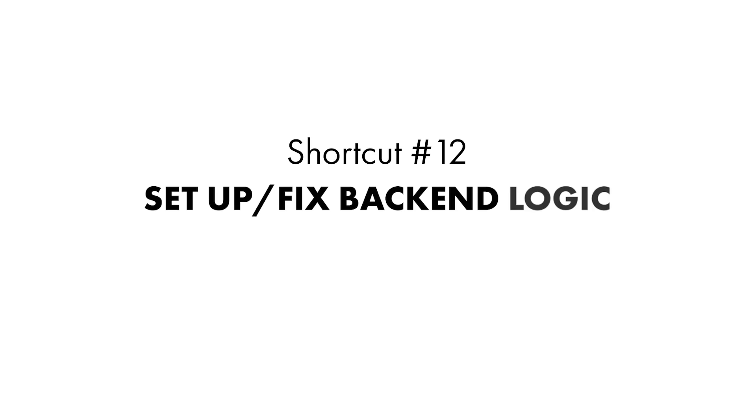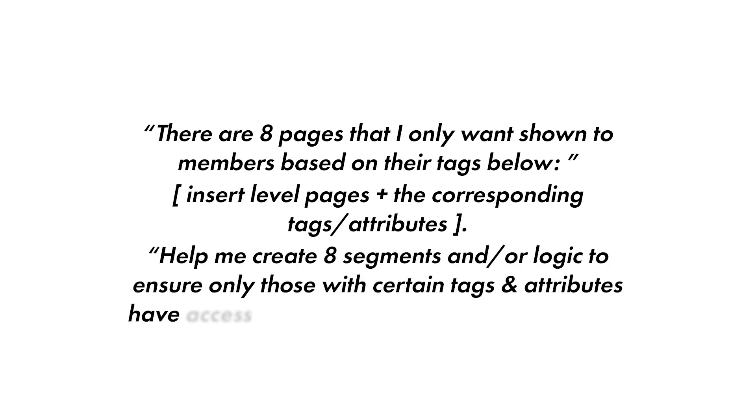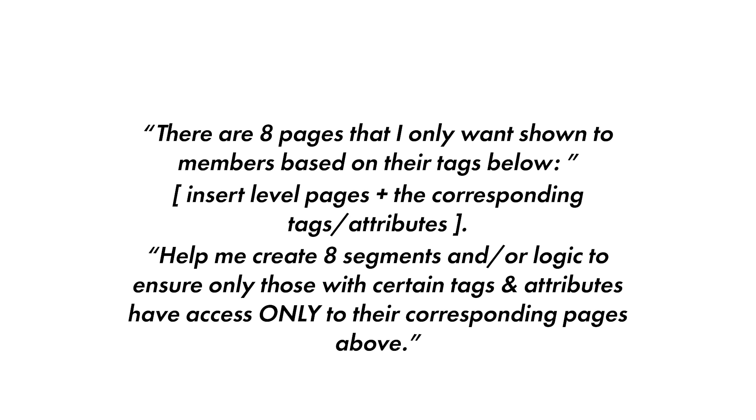Moving on to shortcut number twelve: set up or fix backend logic and automations. Setting up backend automations or fixing consumption and delivery logic in your online tools or membership platforms can feel like throwing spaghetti at a wall. We recently used this to fix logic inside one of our membership sites, which uses complex tagging and segmenting to ensure members have access to the correct level at all times. The prompt we used: 'There are eight pages that I only want shown to members based on their tags below.' We inserted the level pages and corresponding tags and attributes, then asked ChatGPT to create segments and logic to ensure only those with certain tags have access to their corresponding pages.